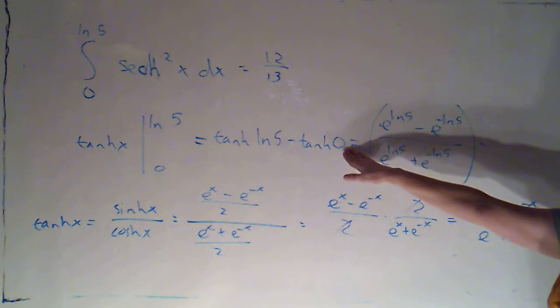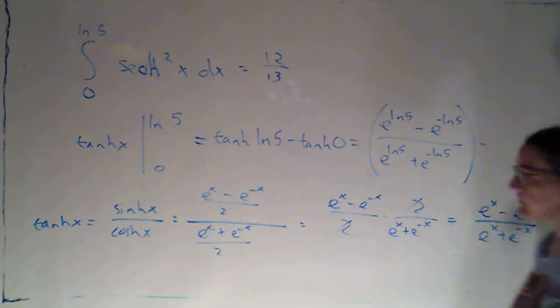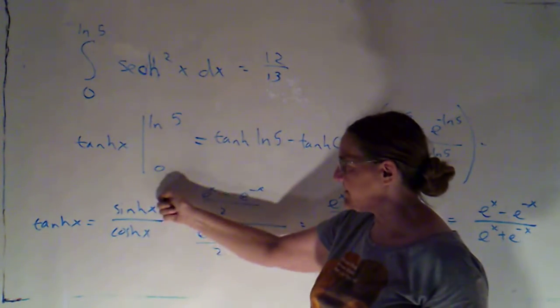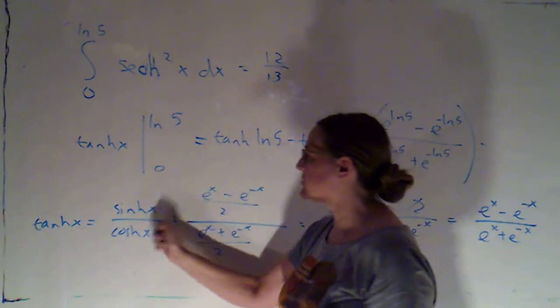I might remember that tanh of 0 is 0. I might remember that sinh of 0 is 0, which is going to make tanh 0, because it's going to be 0 over cosh 0, which is just 1.